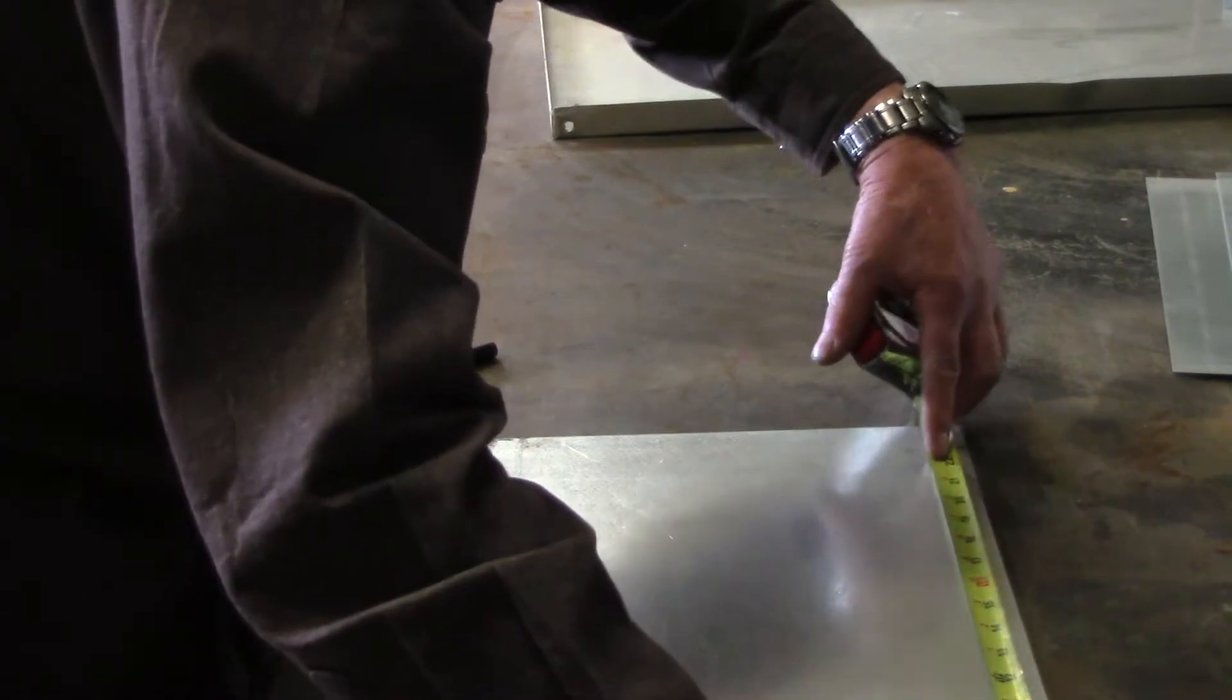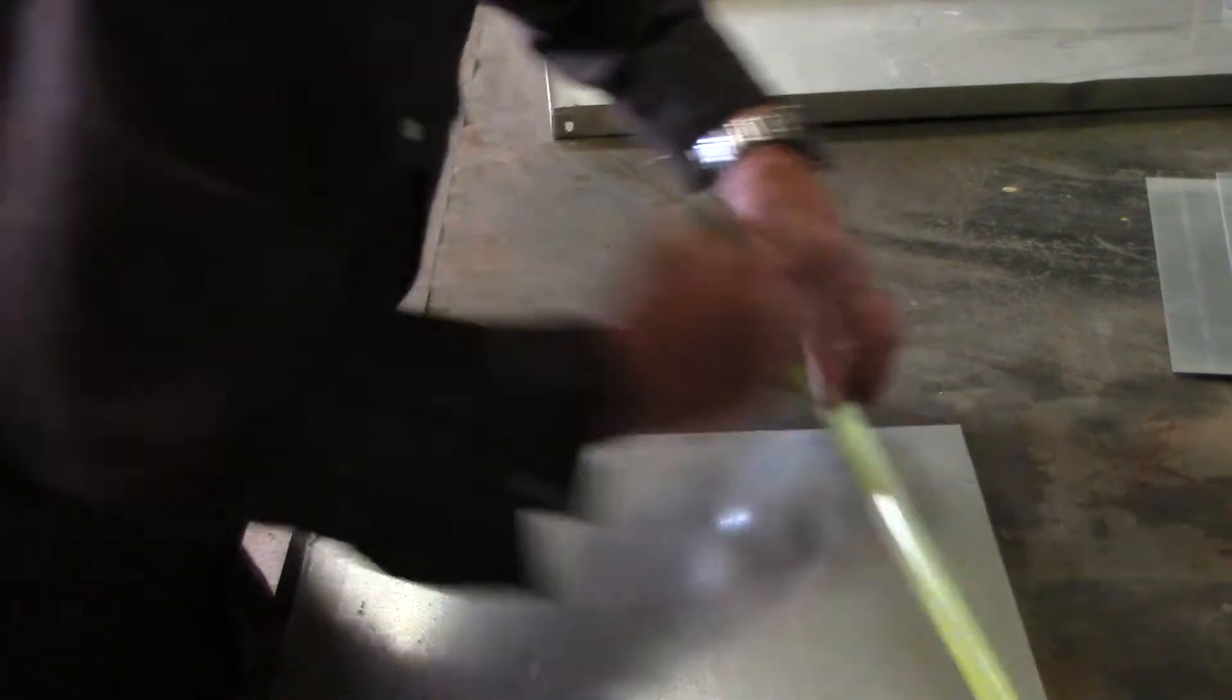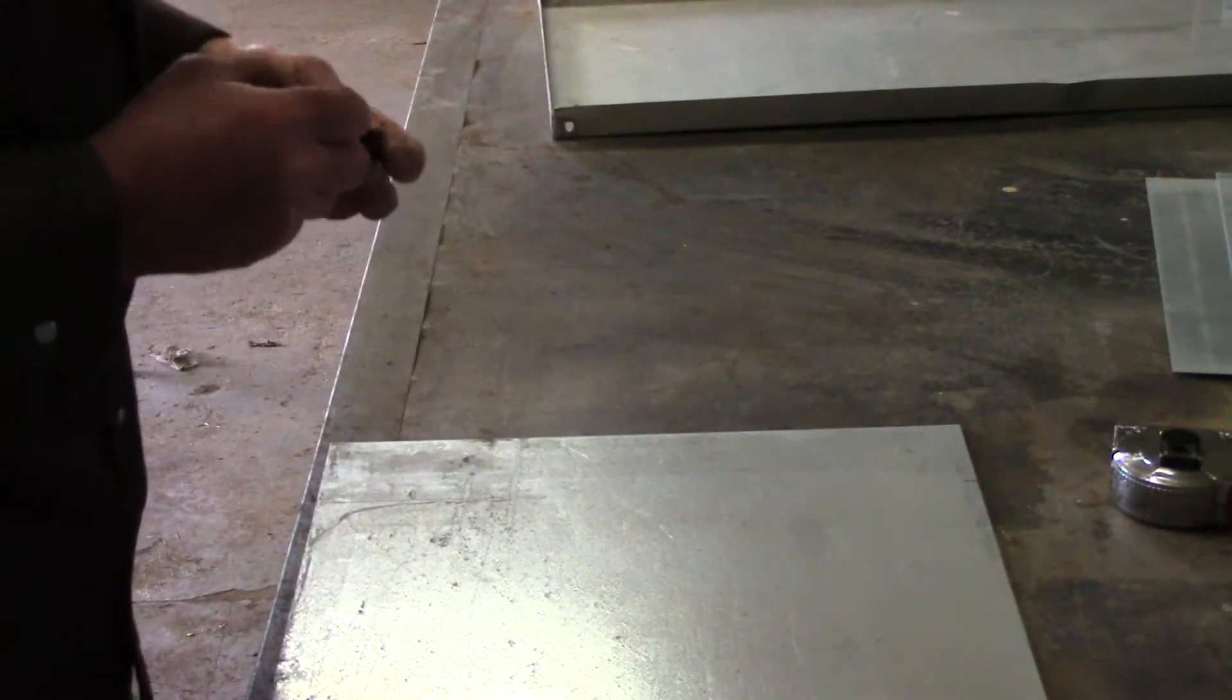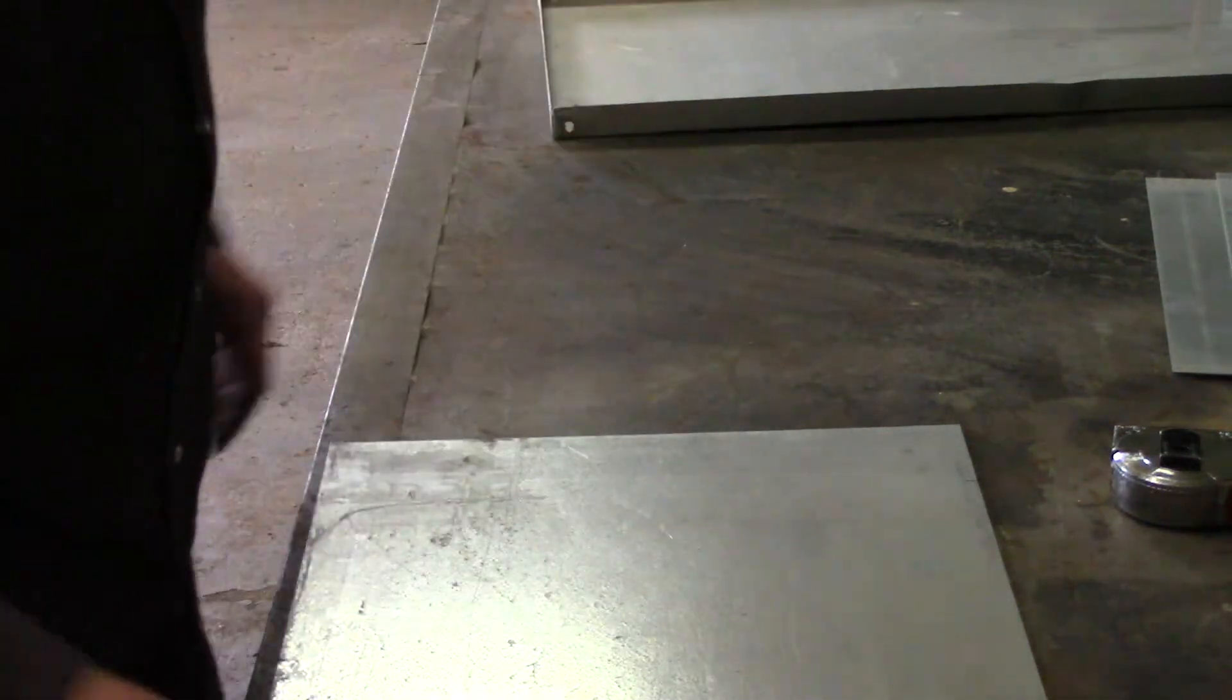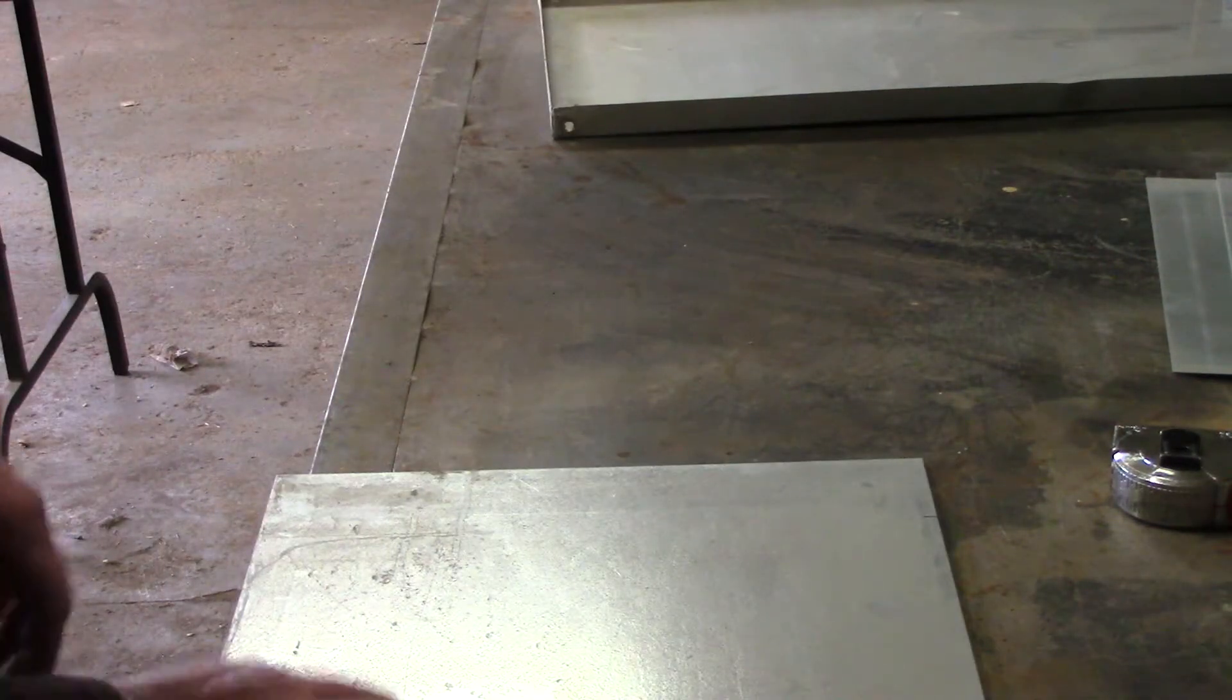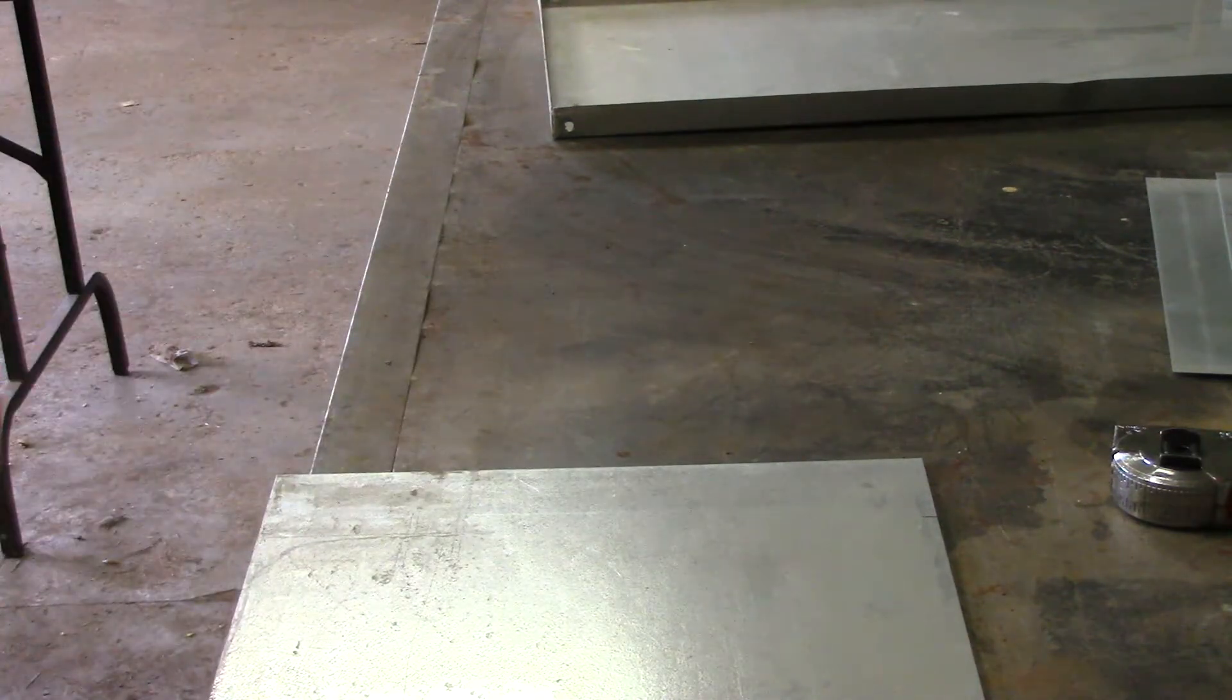And of course, this is the maximum material thickness that I can work on. My brake and my shear is 16 gauge mild steel. I go a little bit thicker with aluminum. Okay, so let's get this measured. Let's go to the shear. Cut it up and then I can start marking it.